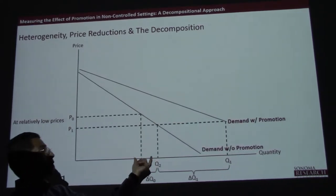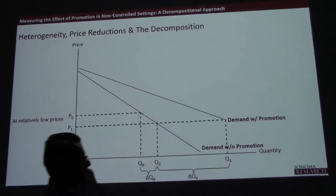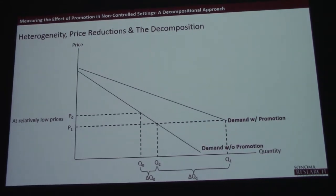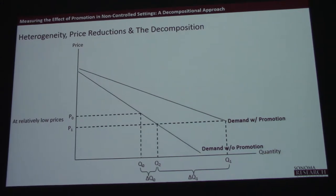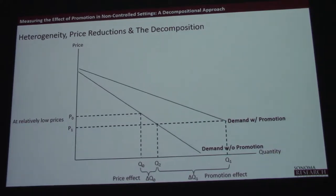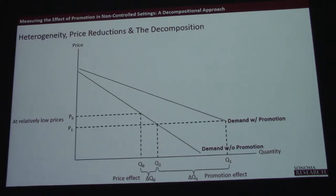This is how much more we would have sold. The rest — the residual — we're going to attribute to the fact that we promoted. We're going to call that the promotional lift. And again, this kind of begs the question of optimization: if there are different promotional effects at different prices, then which price-promotion combination is going to maximize your promotional lift?